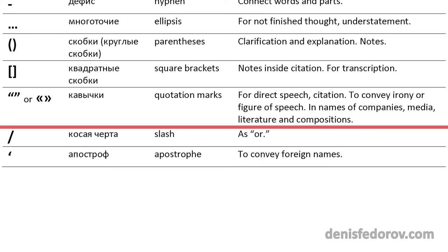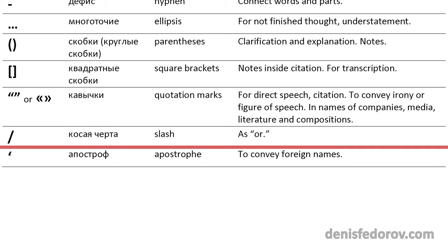Quotation marks — кавычки in Russian. In Russian and English we use quotation marks differently. Before direct speech, when in English we use a comma, in Russian we use a colon. And another difference is that the punctuation mark — comma or period — in Russian is placed outside the quotation marks, but in English inside them. In this video I will teach you how to use quotation marks in Russian.